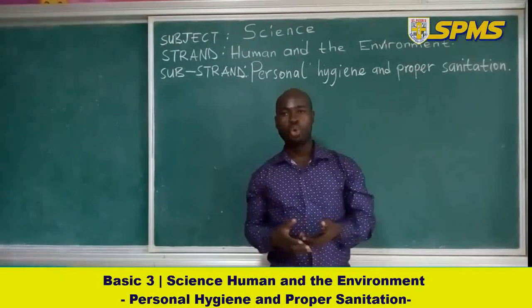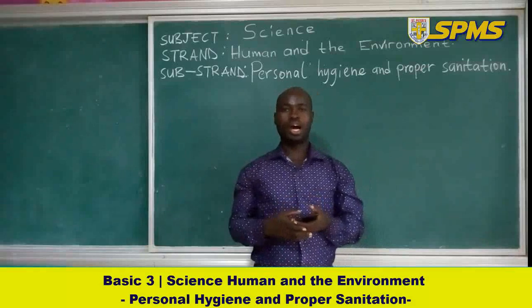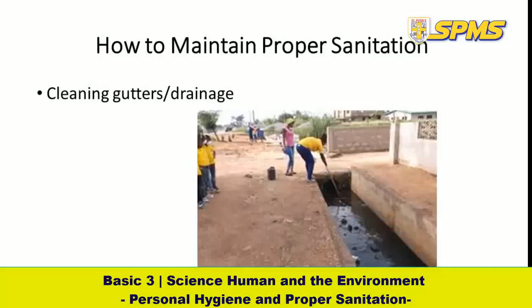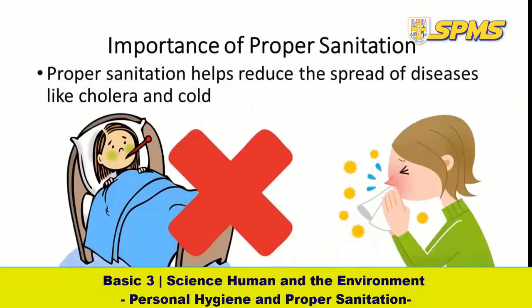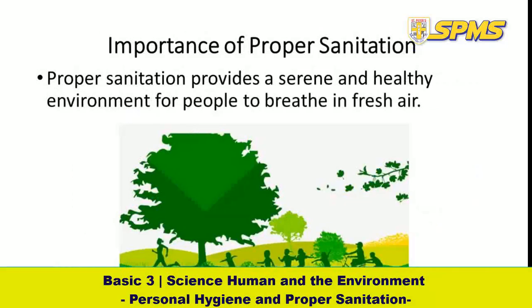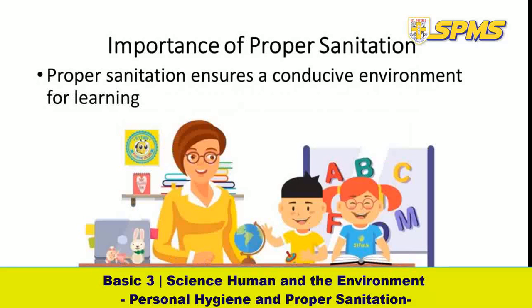Let's talk about the ways of keeping our environment clean. 1. Clean gutters or drainage. 2. Dumping refuse into dustbins. 3. Proper sanitation helps reduce the spread of diseases. 4. Proper sanitation provides a serene and healthy environment for people to breathe in fresh air. 5. It ensures a conducive environment for learning.